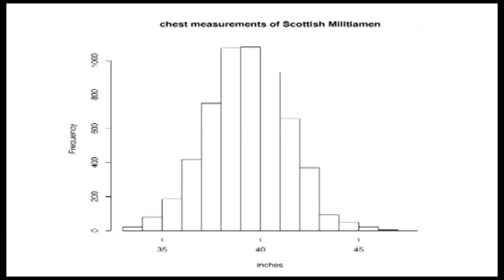There were about 6,500 Scottish militia, and each one has a chest measurement recorded. Here we have a histogram of results. We can see what's quite a characteristic shape of this sort of bell-shaped curve, and many data sets have a very similar picture when you draw a histogram.